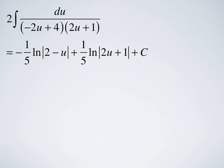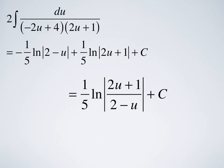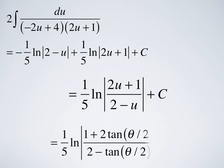Combining the results, we have -1/5·ln|2-u| + 1/5·ln|2u+1| + C. We can simplify using log properties: that's 1/5·ln|(2u+1)/(2-u)| + C. Now substituting back u = tan(θ/2), the final answer is 1/5·ln|(1 + 2tan(θ/2))/(2 - tan(θ/2))| + C. Remember to include the absolute value signs with your natural logs.